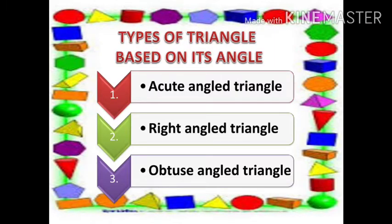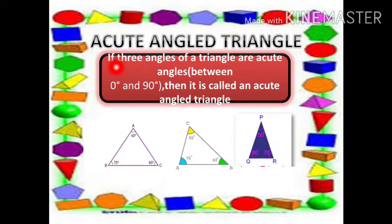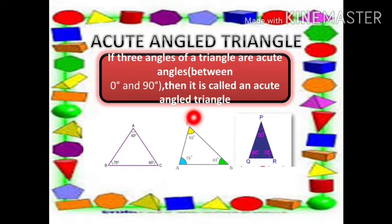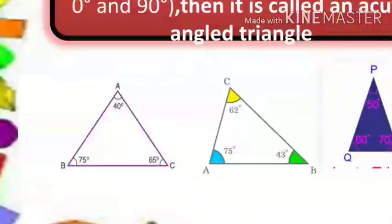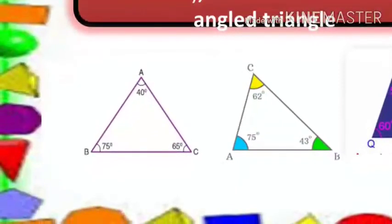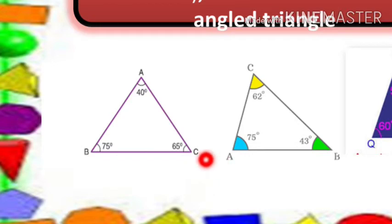Now let's see the types of triangle based on its angles: Acute Angle Triangle, Right Angle Triangle, Obtuse Angled Triangle. An Acute Angled Triangle is one where all three angles are acute angles, meaning they lie between 0 degrees and 90 degrees. For example, angles of 40°, 75° and 65° are all less than 90°, so it is called an Acute Angled Triangle.